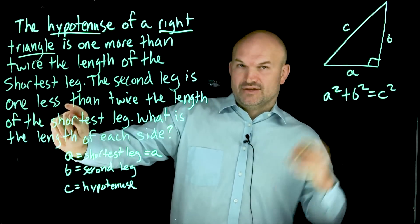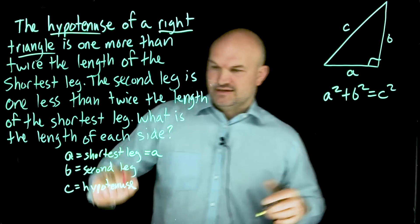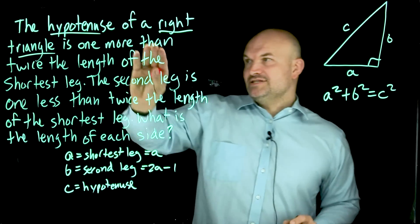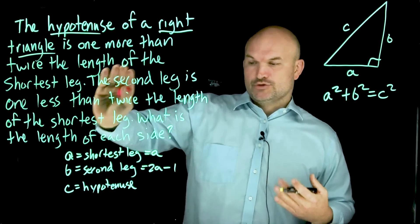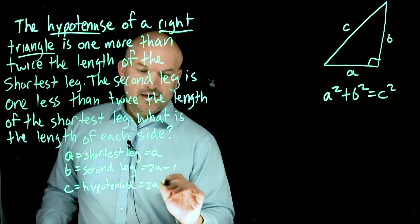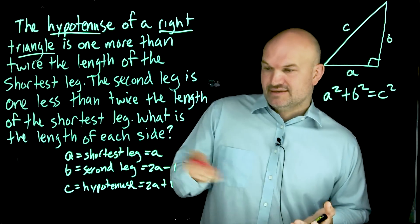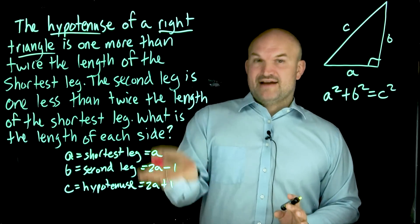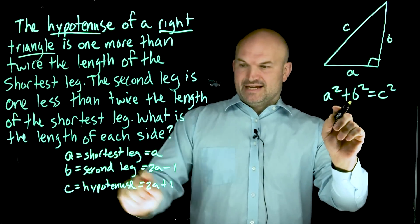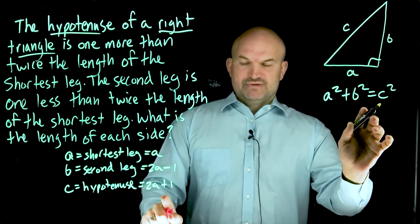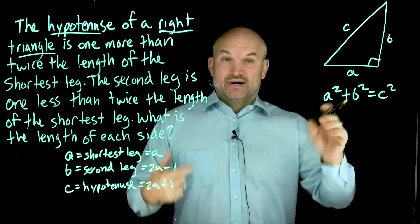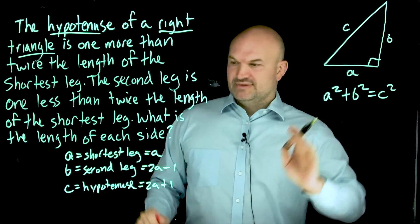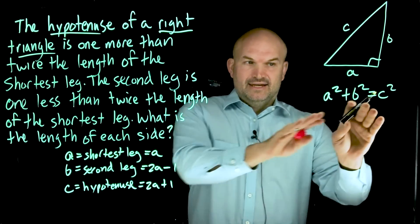The second leg is one less than twice the length of the shortest leg, so that's 2A minus 1. The hypotenuse is one more than twice the length, so that's 2A plus 1. The cool thing is I only have one variable — everything is in terms of A. So rather than using B, I can use 2A minus 1; rather than using C, I can use 2A plus 1. I'm going to plug all three of these in terms of A into the Pythagorean theorem.